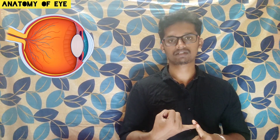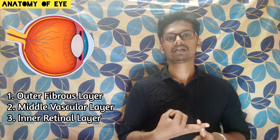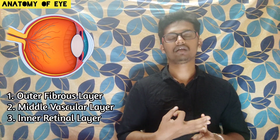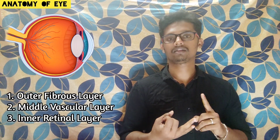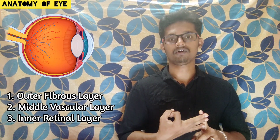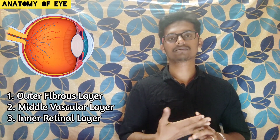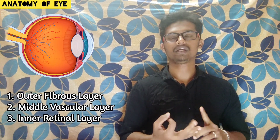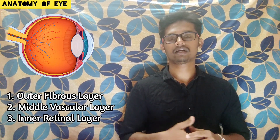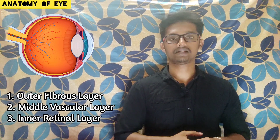The anatomy of the eye can be divided into three parts: the outer fibrous layer, the middle vascular layer, and the inner layer. The outer layer consists of three parts — the sclera, cornea, and conjunctiva. The middle vascular layer consists of the iris, ciliary body, and choroid. The inner layer contains only one structure, which is the essential part for vision — the retina.